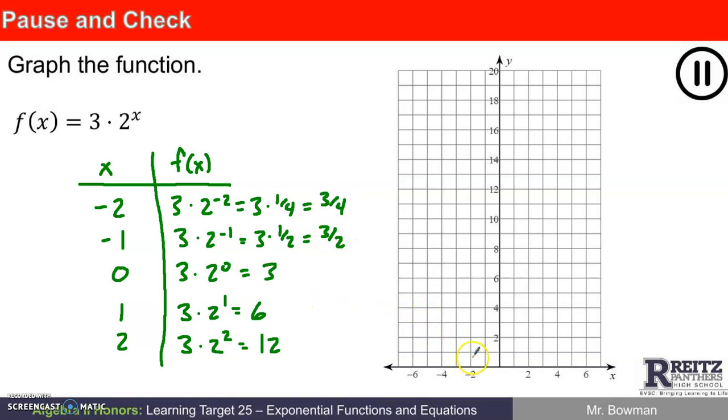I can plot the points I've created here. Two comma three fourths. Negative one comma three halves. Zero comma three. One six. Two twelve. The next one would be three comma twenty four, which is off the graph. So it should come in from very small but positive y values, hit all of these points, and then shoot off huge.